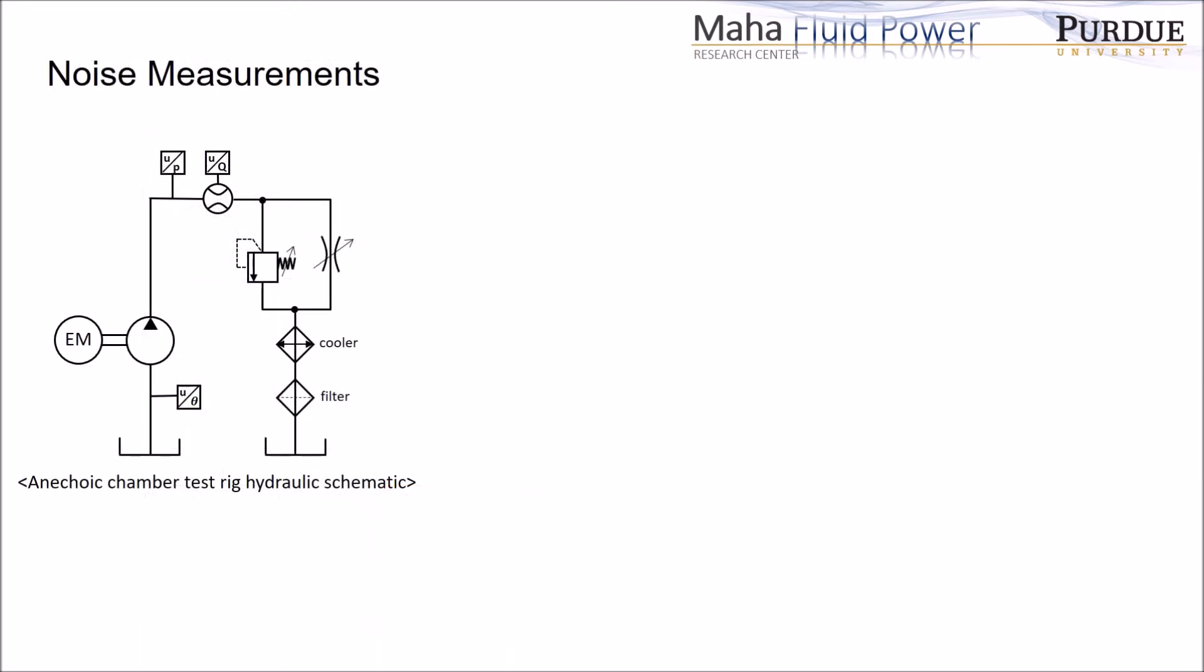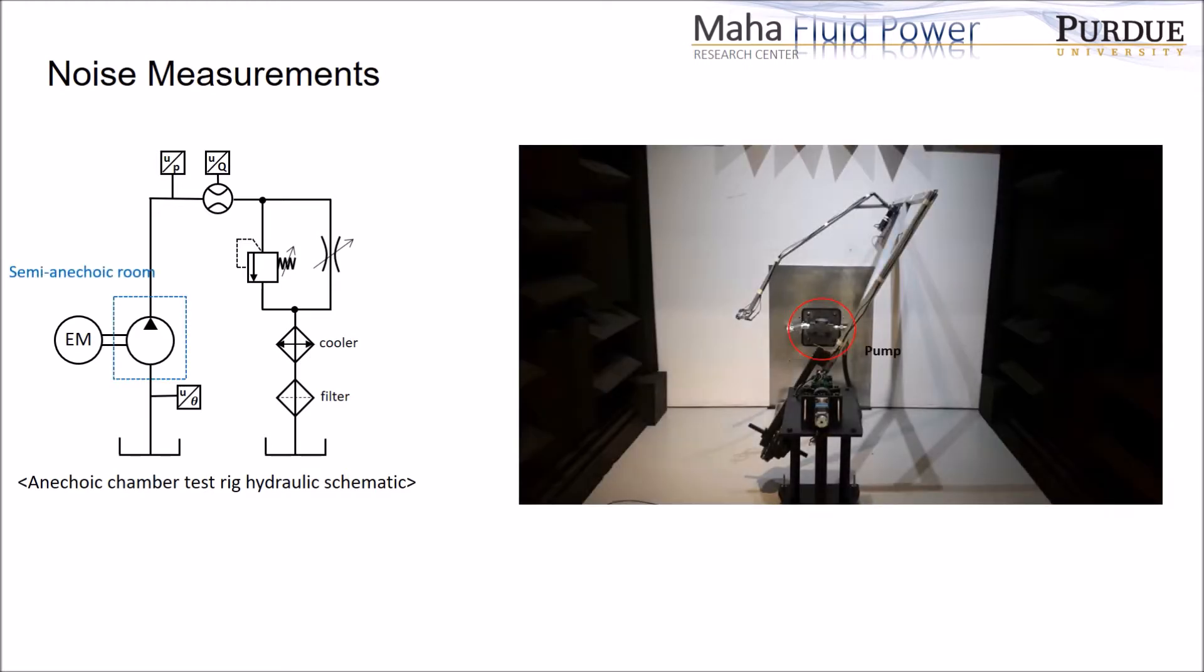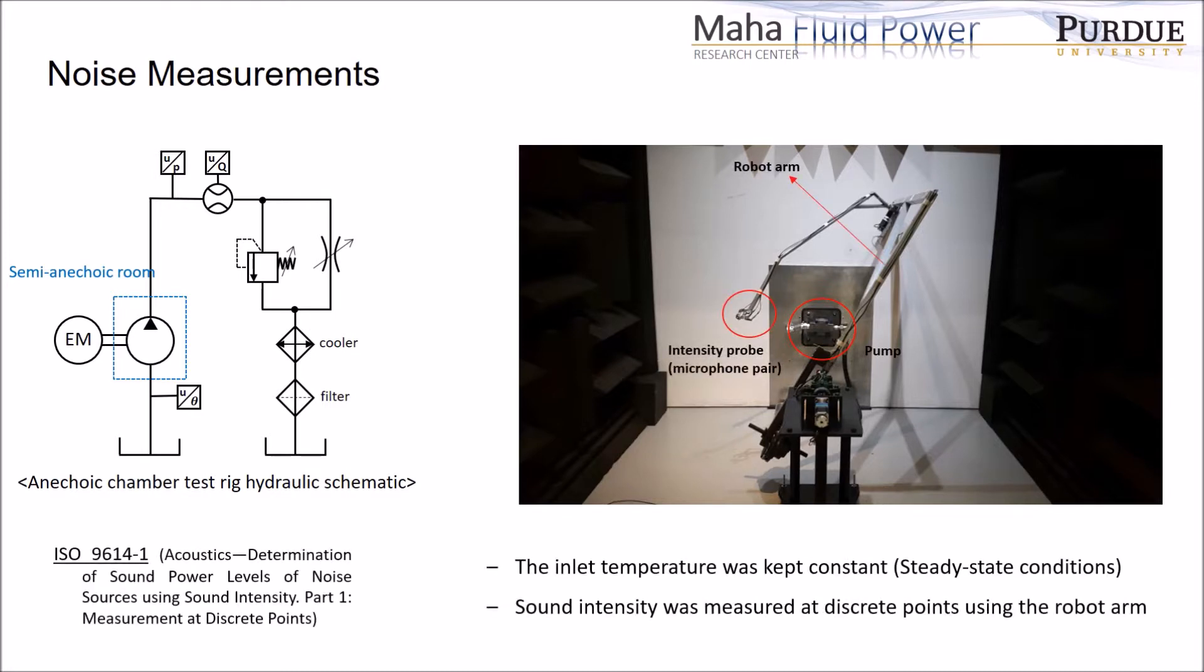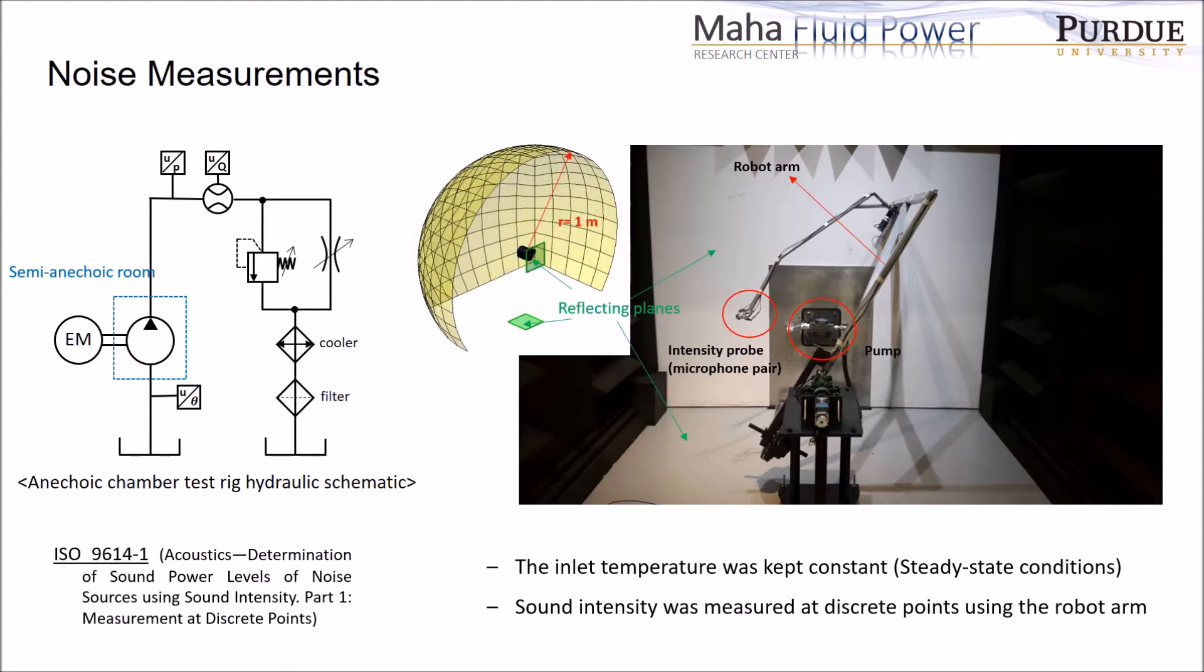To validate the acoustic model, the pump was tested at the semi-anechoic chamber. Only the pump and the short connecting lines were inside the chamber, and during the measurement, the temperature was kept constant. Sound intensity was measured using the robot arm following the ISO standard. To be specific, the robot arm moved the sound intensity probe to the desired point, and the noise was recorded for a few seconds. Then, the intensity probe was moved to the next position. The shape of grid points for the measurement is the same with the shape of the field point mesh, and you can also see the two reflecting planes, which are the wall and floor inside the chamber.